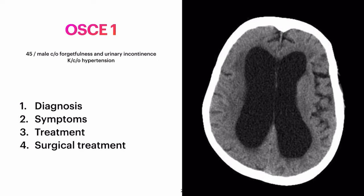Question one: a 45-year-old male came with complaint of forgetfulness and urinary incontinence. The patient is a known case of hypertension. A CT scan of the patient was done — the image is shown to you. You have to read the diagnosis, write down six symptoms, treatment, and the surgical management of the patient.